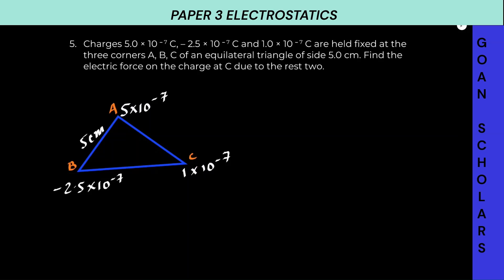We are finding the force on C due to A and B, because those are the only two who will influence C. Force at C due to A — will it be attractive or repulsive? It will be repulsive, because the charge at A is positive and charge at C is again positive, so they repel each other. It will be along the line joining A and C.